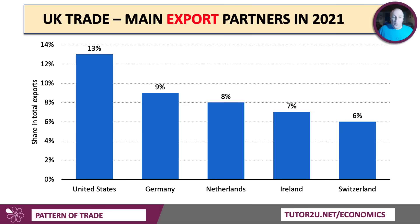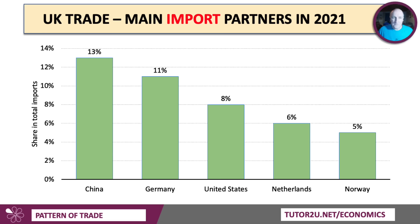Our biggest export partners in 2021: the United States is our biggest single export partner at 13%, Germany at 9%, Netherlands at 8%, then Ireland and Switzerland — Switzerland, of course, is outside the EU, and a large part of that trade is gold. Our main import partners: China comes top at 13%, followed by Germany, the USA, Netherlands, and Norway. Norway is outside of the European Union but inside the single market.